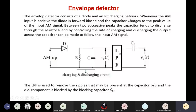The output is then passed to a low pass filter, which removes the ripples that may be present at the capacitor output. The DC component will be blocked by the blocking capacitor, if any. So, if there is any DC component, it will be removed by this blocking capacitor.